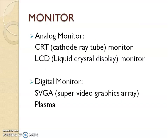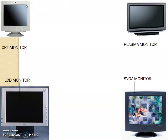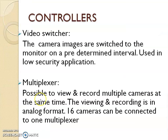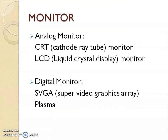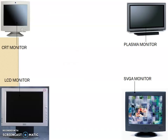Next is the monitor. There are a wide variety of monitors — you should know about CRT (cathode ray tube), LCD (liquid crystal display), and digital monitors like SVGA (super video graphics array) and plasma. These older monitor types are not in common use nowadays, but it is still useful to know them. The purpose of the monitor is to display the image being captured by the CCTV camera for the user to view.